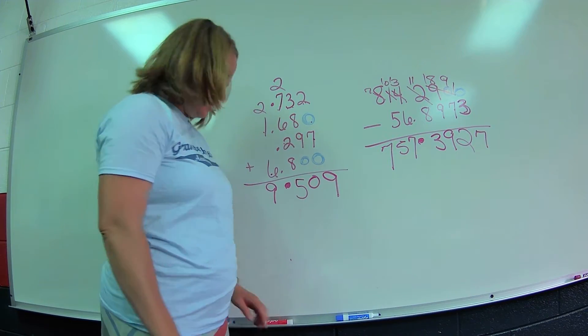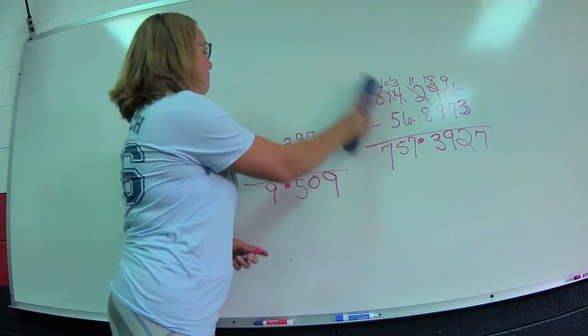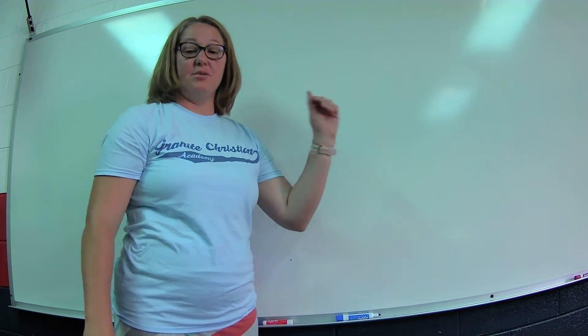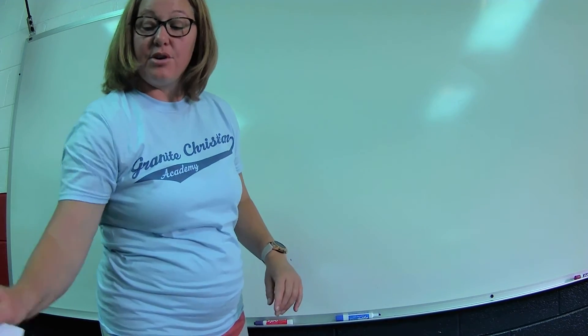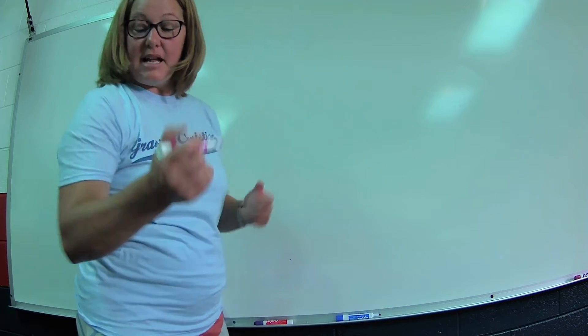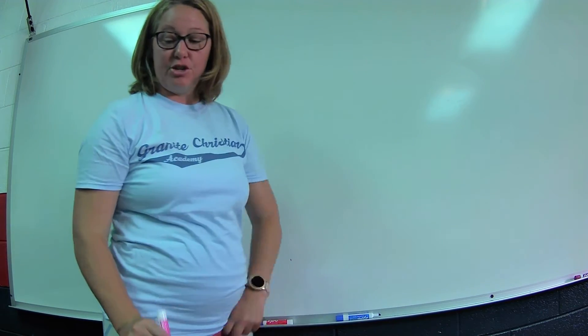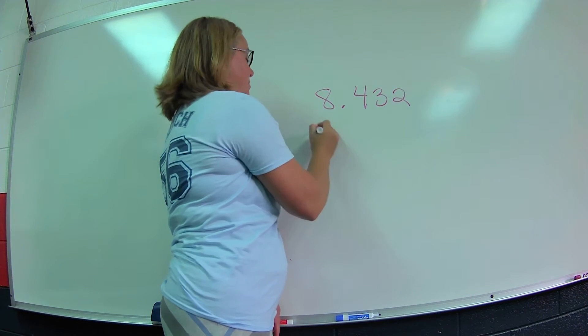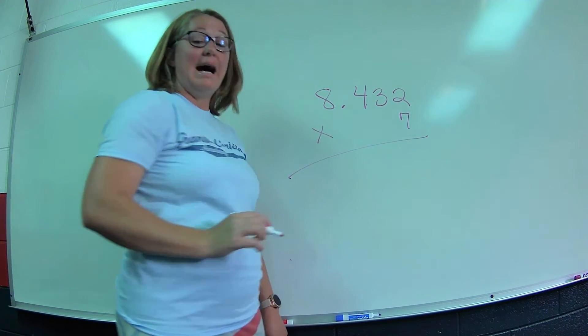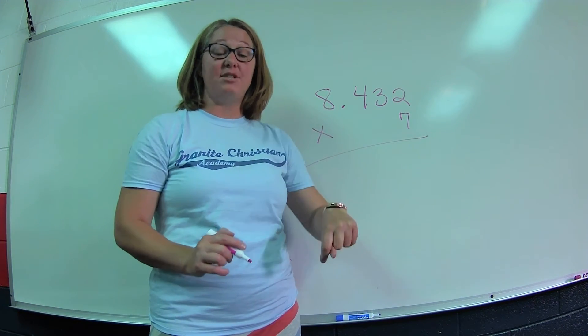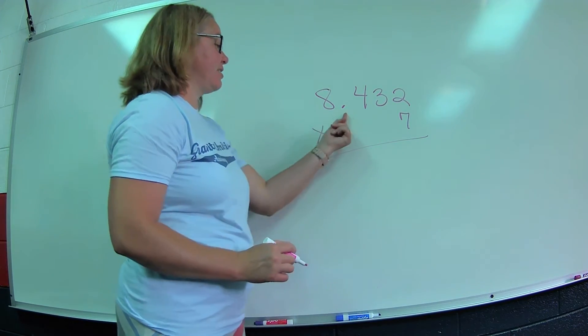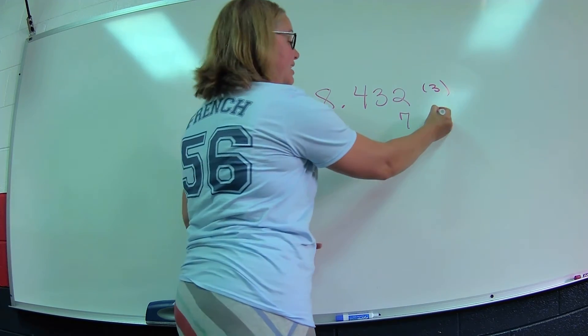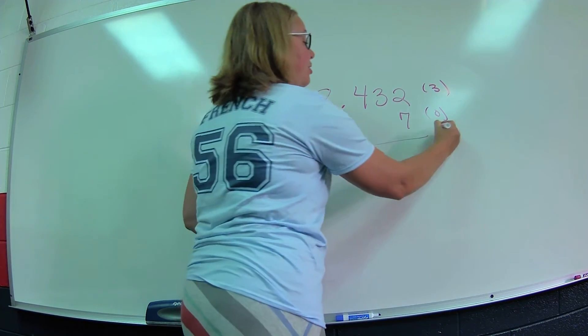Now we're going to multiply decimals today. In adding and subtracting, decimals come straight down. I want to make sure I have the same number of digits. But now we're going to multiply, and it's not much different than regular multiplication. If I have 8.432 times 7, I now need to count my decimal places. Here I have three decimal places. Here I do not have any decimal places because I have a whole number. So total, my answer should have to the third decimal point.